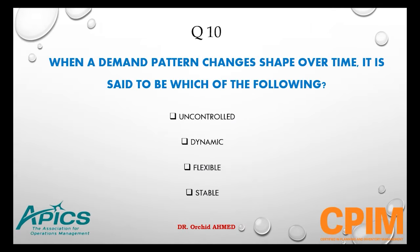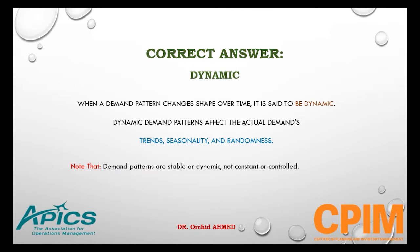Question number 10. When a demand pattern changes shape over time, it is said to be which of the following? Options: uncontrolled, dynamic, flexible, or stable. The right answer is dynamic. Dynamic demand patterns affect actual demands, trend, seasonality, and randomness. Note that demand patterns are described as stable or dynamic, not constant or controlled.